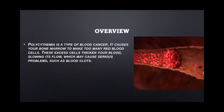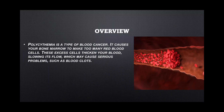So first of all, let's discuss what polycythemia vera is. It is actually a type of blood cancer and it causes your bone marrow to make too many red blood cells. As we know, the function of bone marrow is to produce blood cells — for example, red blood cells, white blood cells, and platelets. But in this condition, it will produce an enormous amount of red blood cells, and we will see the problems that can be caused due to this increased level.